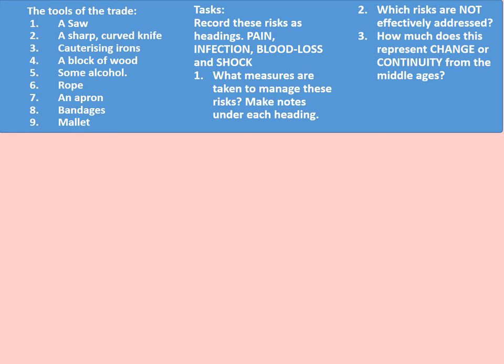In a moment I'm going to explain the process of a Renaissance amputation. Your task will be to record these risks as headings: Pain, Infection, Blood loss, and Shock — remembered as PIBS. As I go through the amputation process, record under these headings what measures are taken to manage these risks. If any headings are blank at the end, it may be that nothing was done about that particular problem.